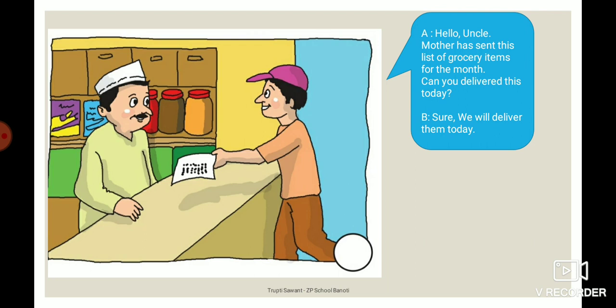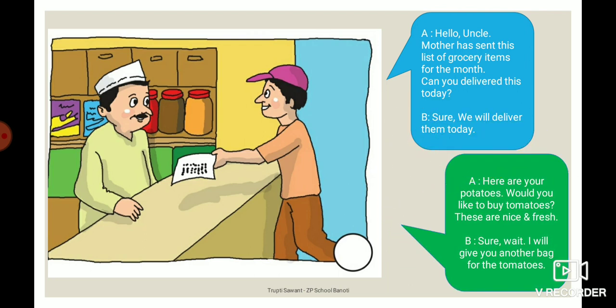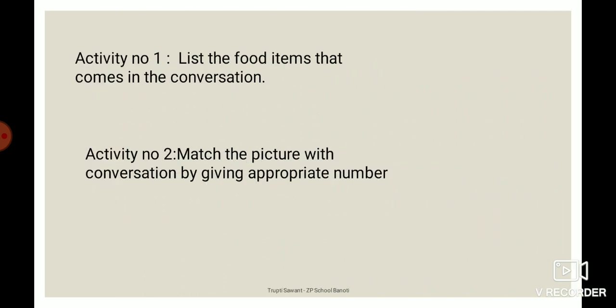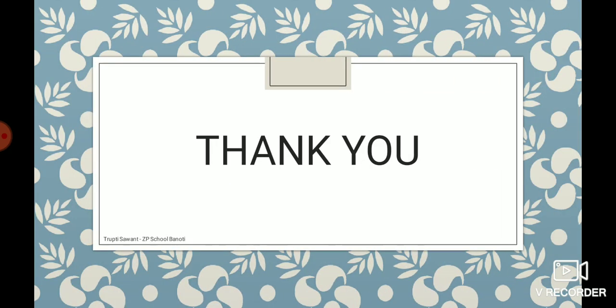I hope you all understand about this conversation. Now dear student, you have some activities. Activity number one: write a list of food items that come in the conversations. Activity number two: match the pictures with the conversations by giving the appropriate number. I hope you all understand it very well. So keep learning, enjoy learning. Take care. Thank you.